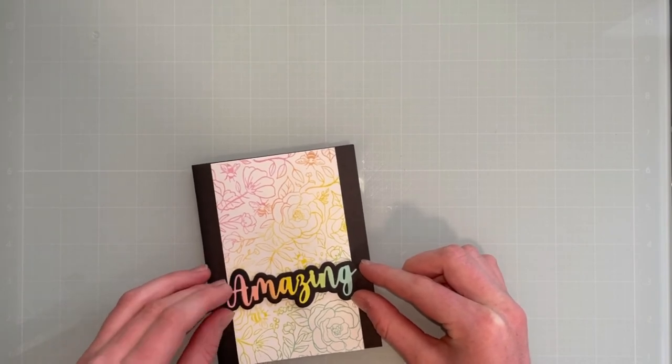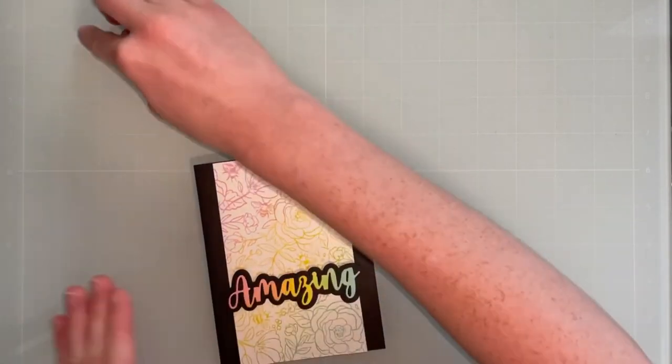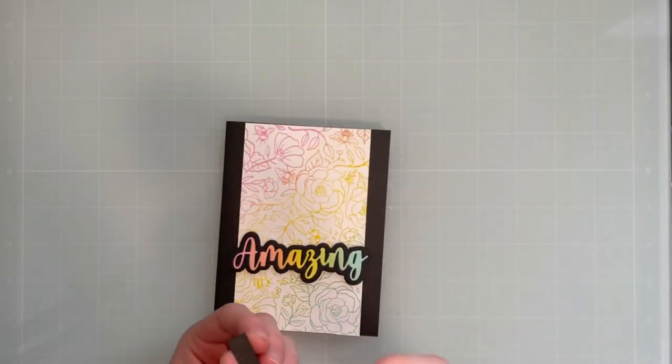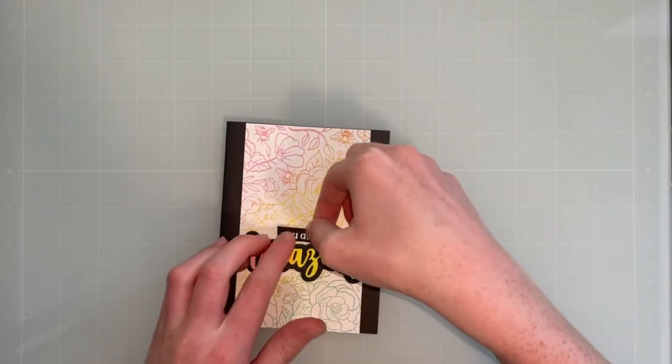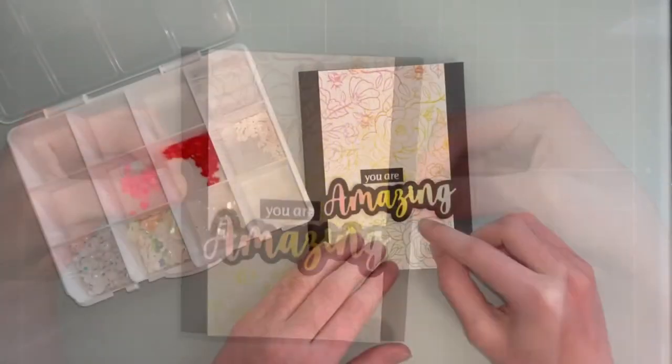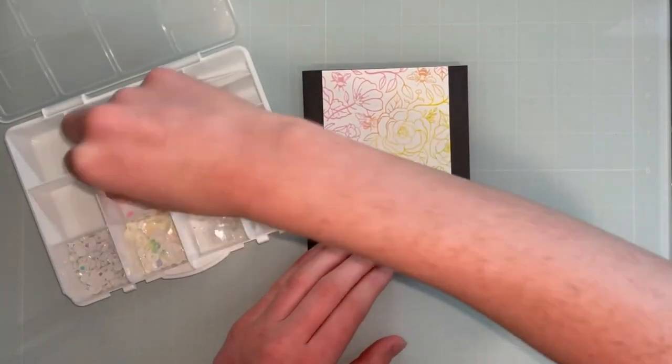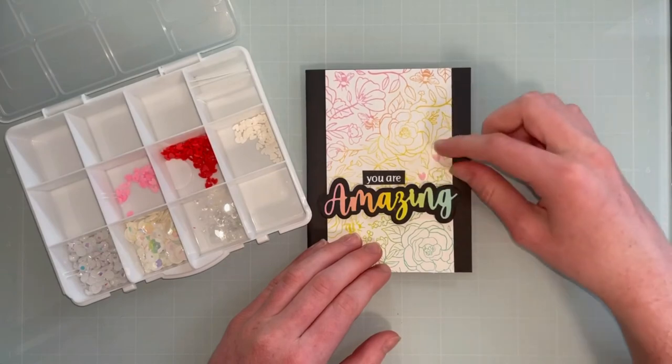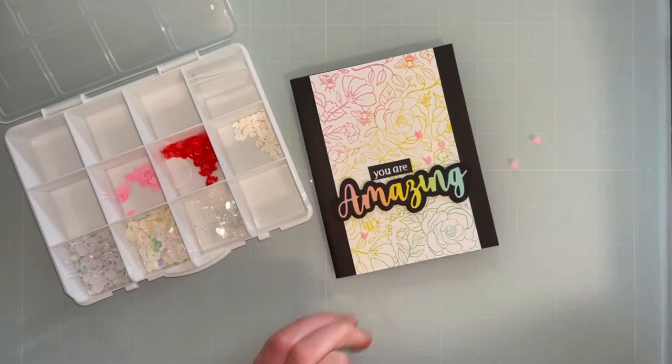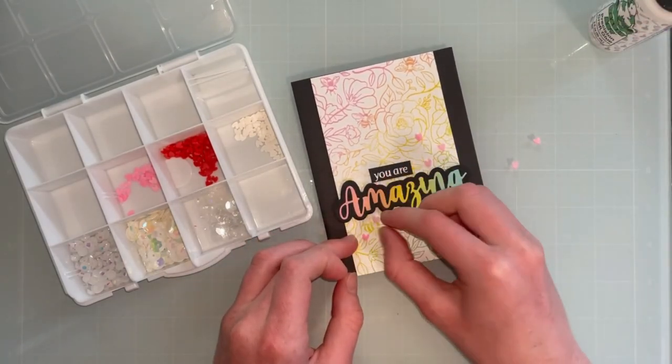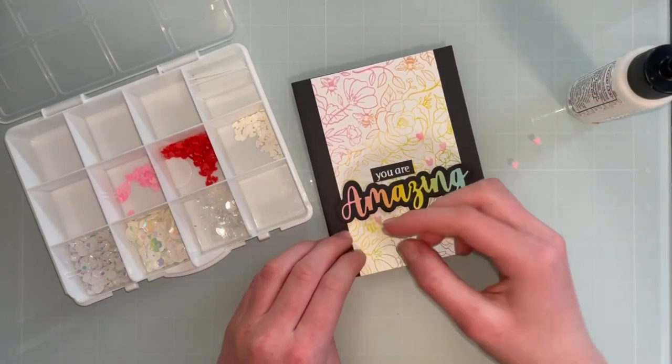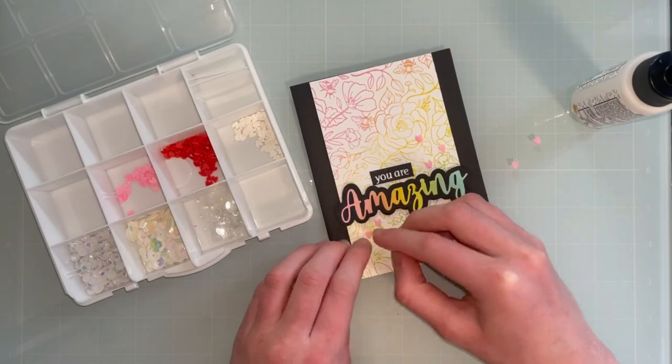And then I will just add a UR little sentiment strip there to complement this sentiment. And then I wanted to add embellishments to this one as well, and so I'm going to be using those pink hearts again. I'm going to be using more this time. I'm going to have them cascade across the card. Again, it just connects it a little bit better. So I'm just going to place them, and then I will add some liquid glue to glue them down.